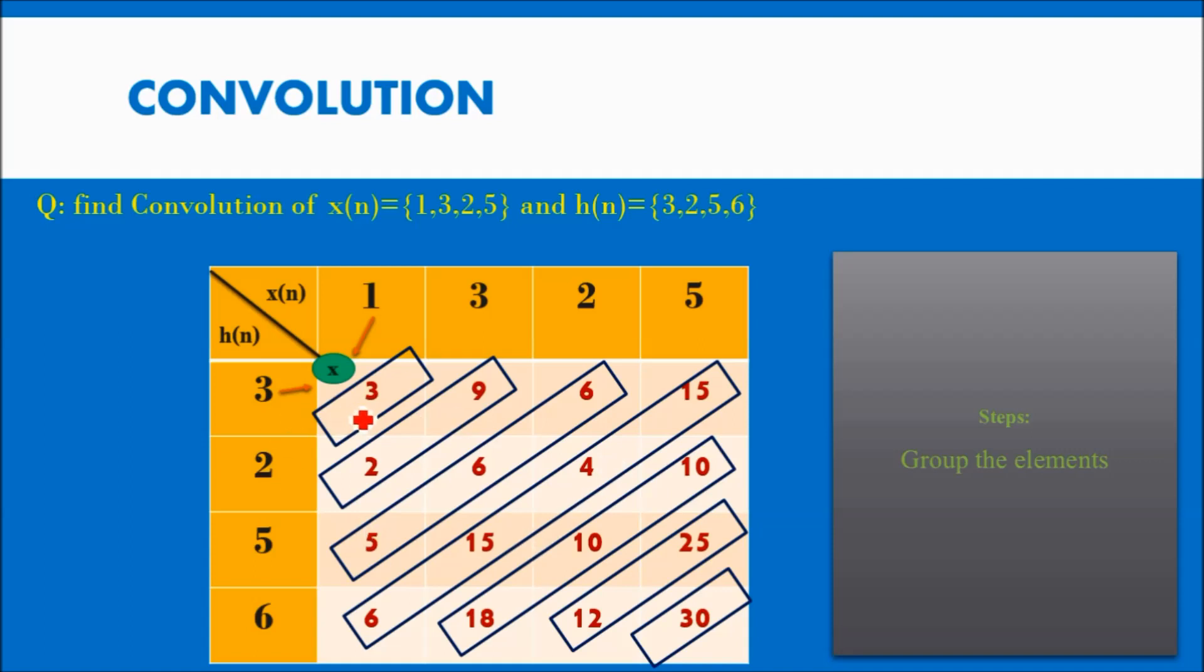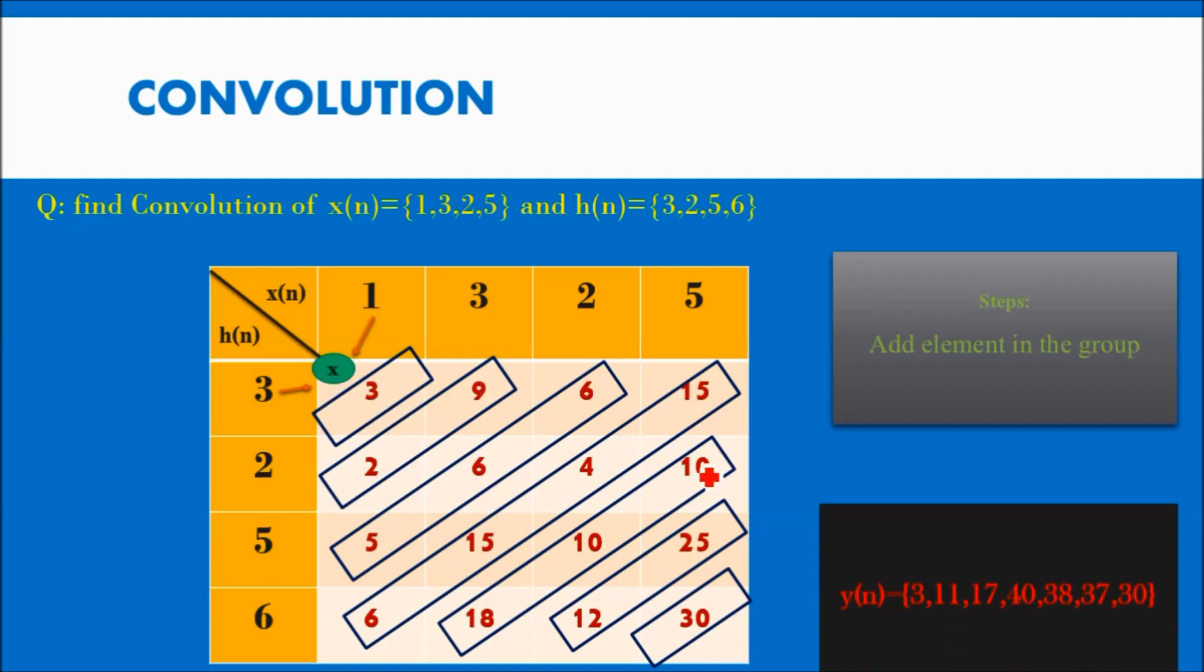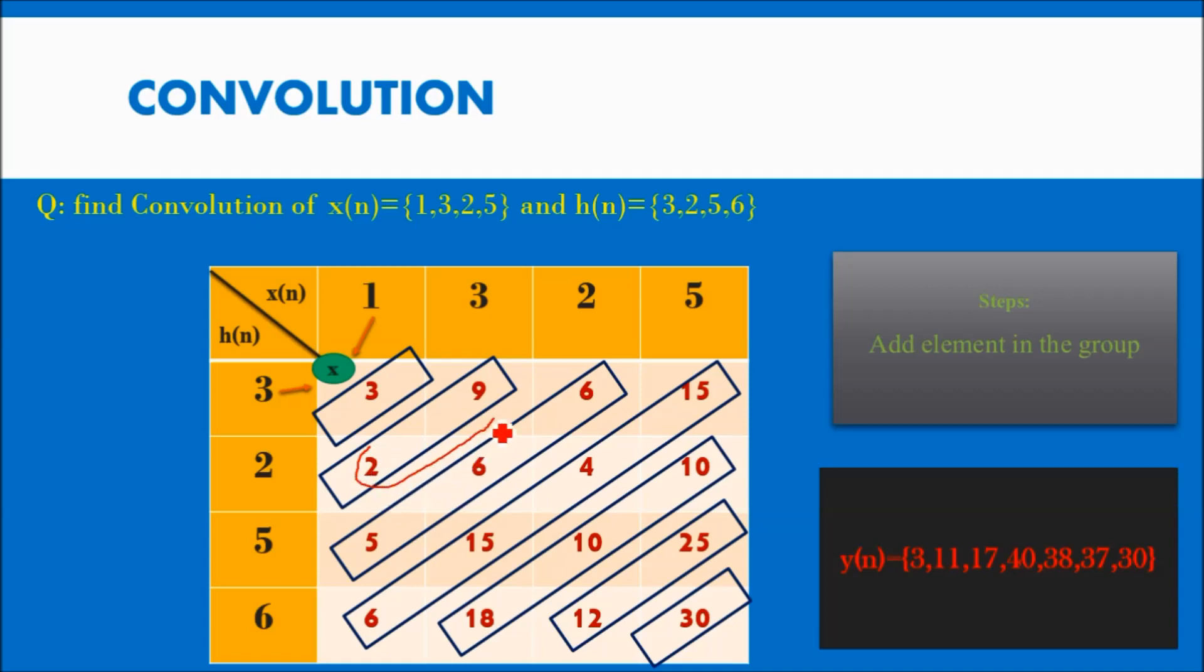Here only one element: 3, so the first answer is 3. Here two elements: 2 plus 9, so the addition is 11. Then 5 plus 6 plus 6. 6 plus 6 is 12 plus 5, so that is 17. Accordingly, add all the elements. And that is your linear convolution by using tabular method.